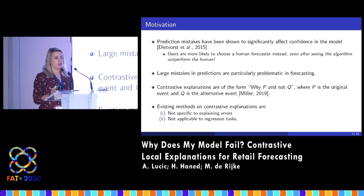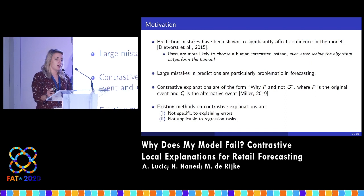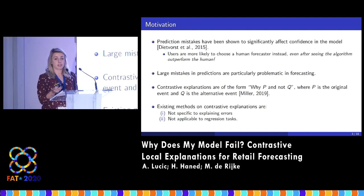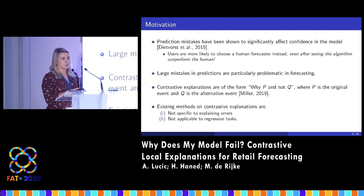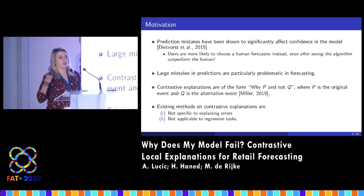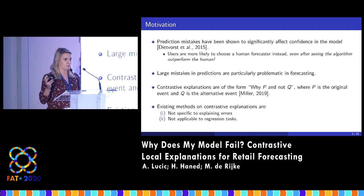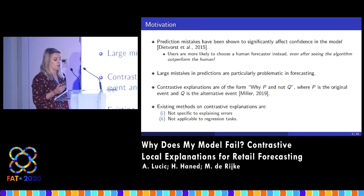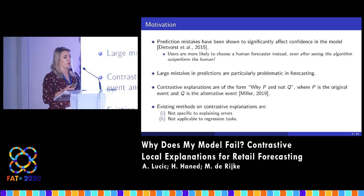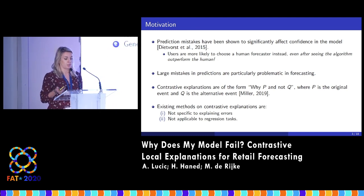What we aim to do here is offer explanations specifically for prediction mistakes in the form of contrastive explanations — so why did this prediction result in an error rather than not resulting in an error? We call not resulting in an error a reasonable prediction. Existing methods on contrastive explanations are not specific to errors and are not particular to regression tasks, so this is where our contribution comes in.